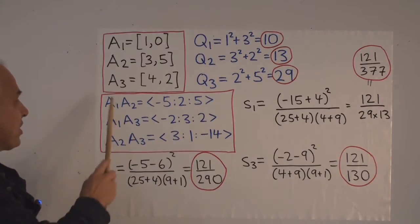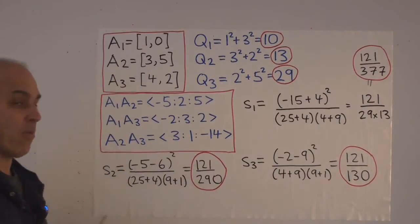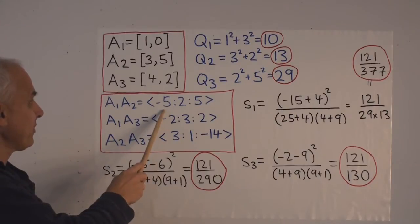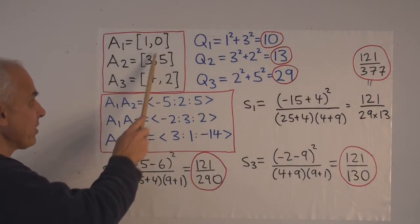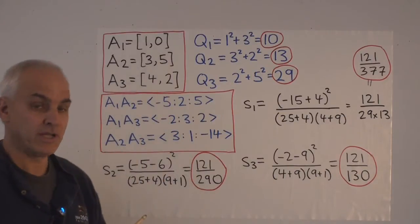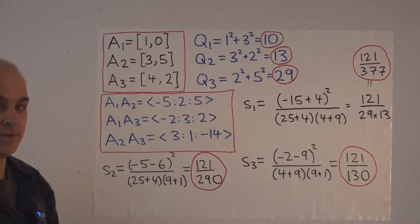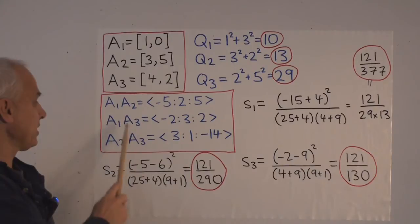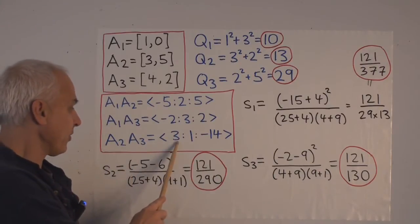To calculate the spreads, we first need to calculate the lines joining these points. For line a1a2, we look at y1 minus y2 as the first coordinate, then x2 minus x1 as the second, and then x1·y2 minus x2·y1 equals 5 as the last. We can verify this line passes through both points. Similarly, a1a3 is (−2 : 3 : 2) and a2a3 is (3 : 1 : −14).